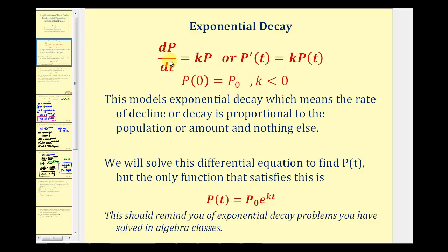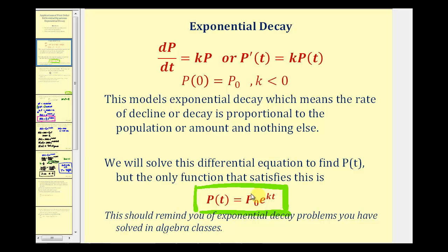So the change of p with respect to t is equal to some constant k times our function p. And because we have decay, k is going to be negative. In part one, we actually solved this differential equation to find p of t, which we found to be p of t equals p sub zero times e raised to the power of kt, where p sub zero is the initial amount, k is the decay rate, t is the time, and p of t is the amount after time t.